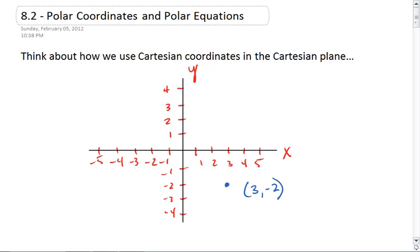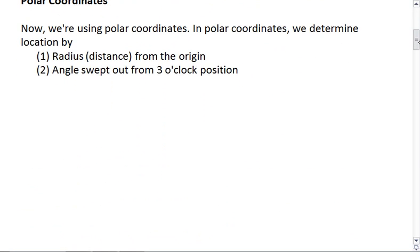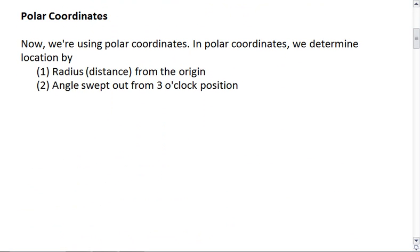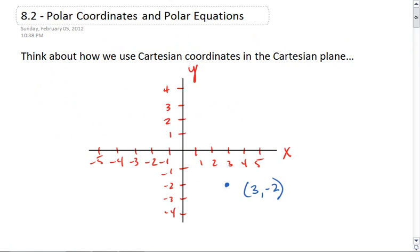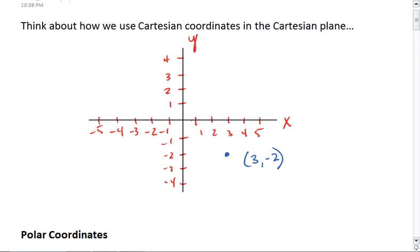Now we're going to talk about a different way to plot points. When we're using polar coordinates, we determine location by first radius, the distance from the origin, and then the angle swept out from the 3 o'clock position. So Cartesian tells us how far to go right or left, and then how far up or down. Polar tells us how far to go out from our origin, and then what angle we take.